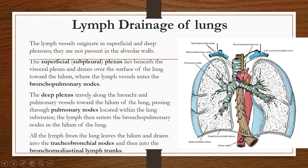To summarize lymphatic drainage: the superficial or subpleural plexus lies beneath the visceral pleura and drains into bronchopulmonary lymph nodes at the hilum. The deep plexus, present in the substance of the lung, drains lymph first to pulmonary nodes, then to bronchopulmonary nodes, then to tracheobronchial lymph nodes, and finally into the bronchomediastinal lymph trunk. Ultimately all lymph drains into the bronchomediastinal lymph trunk.